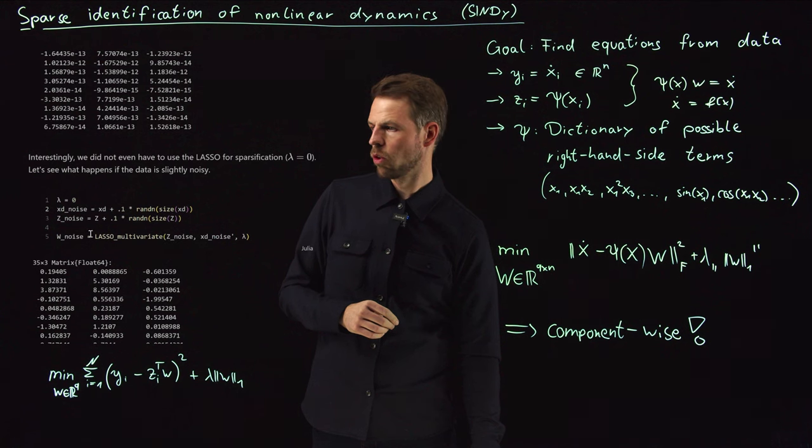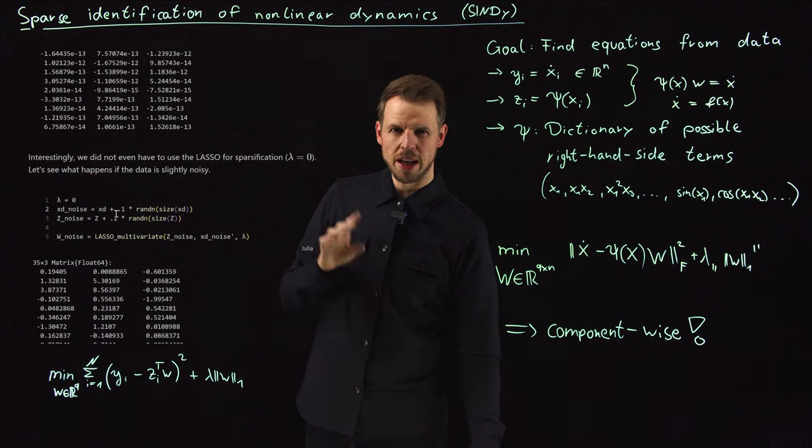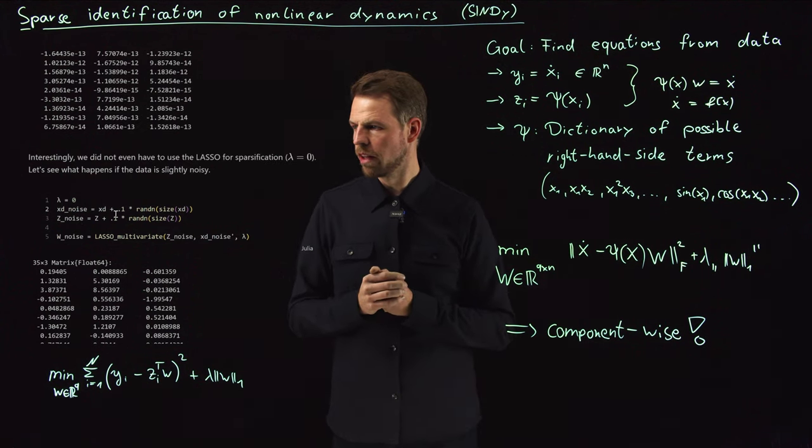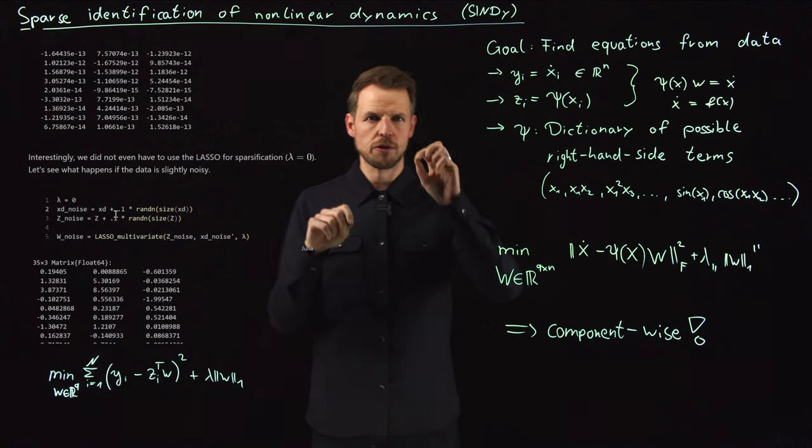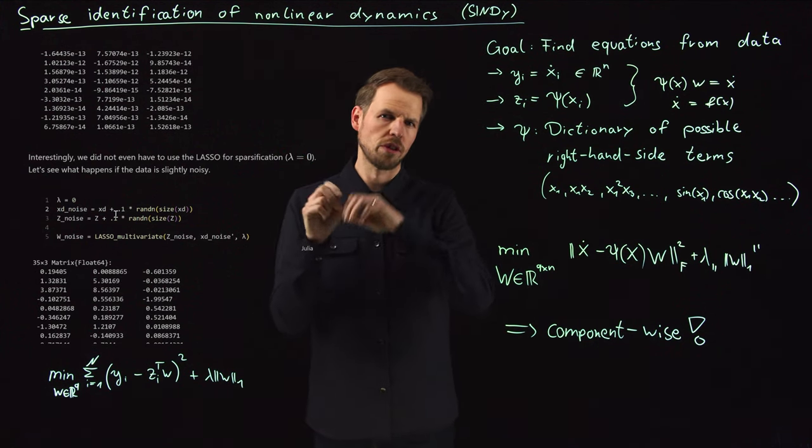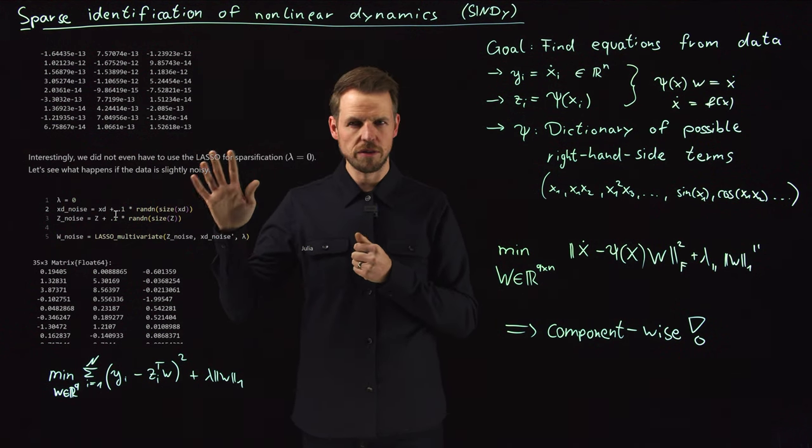To make things more interesting, what I'm going to do now is, I'm going to add Gaussian noise to both x and the derivative. X may be a bit hard, but for the derivative, this usually makes sense because you often have to calculate the derivative using finite differences from trajectory data. So that this is noisy, it's a very likely situation.